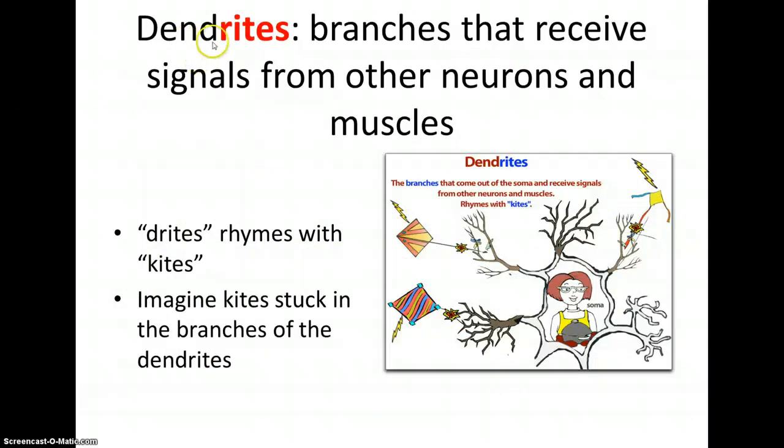Let's start with the dendrites. Well dendrites kind of sounds like kites. So you can think about the branches that come out of the soma and receive signals from other neurons and muscles. This kind of rhymes with kites. So we've got a picture of some kites hanging on the branches of dendrites. I don't know guys I'm doing my best here.